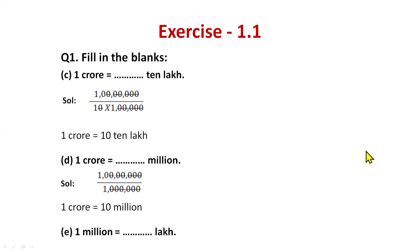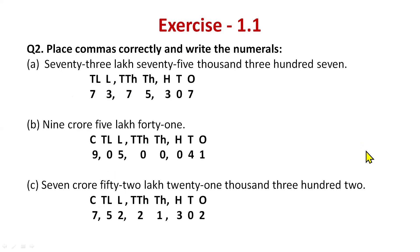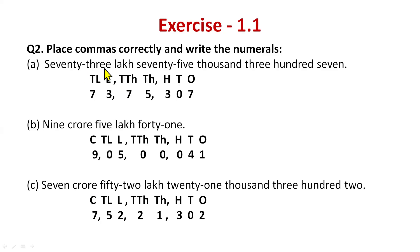Moving to the next question. Here they are saying: place commas correctly and write the numerals. You need to first recognize the system — if the number uses lakh or crore it's the Indian system; if it uses million it's the international system. For part (a), 73 lakh 75 307 — this is from the Indian system.